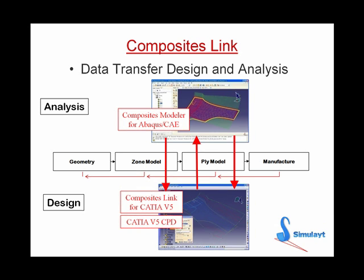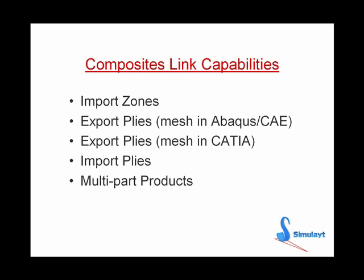This example uses Composite's Modeler and Abacus CAE, but any analysis product using Simulate's technology will work in a similar way. This video will demonstrate the use of Composite's Link with five scenarios: firstly, importing zones created in an analysis package into CATIA V5; then two ways of exporting plies — first to a mesh already created in the analysis tool, and second with a mesh created in CATIA. Then we'll show plies imported back from the analysis tool, and also a quick case study with multi-part products.